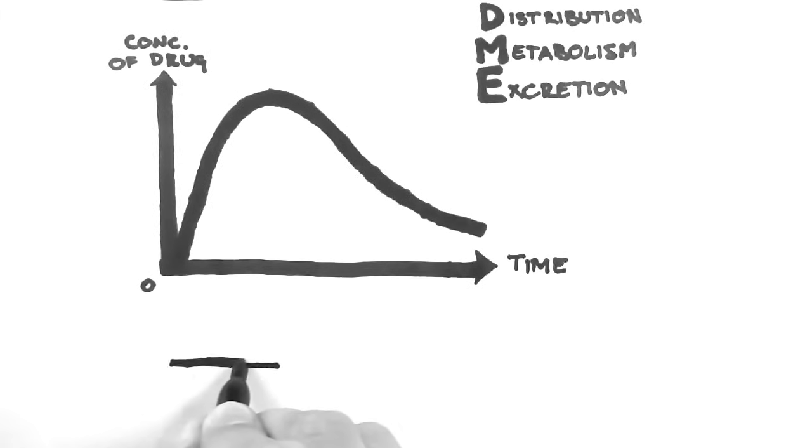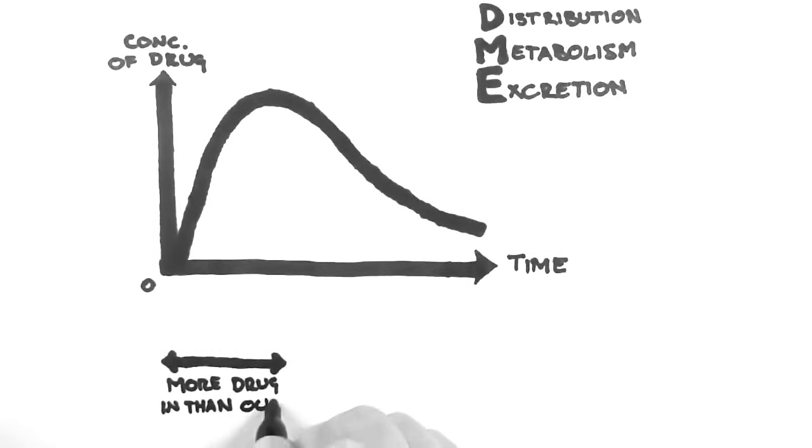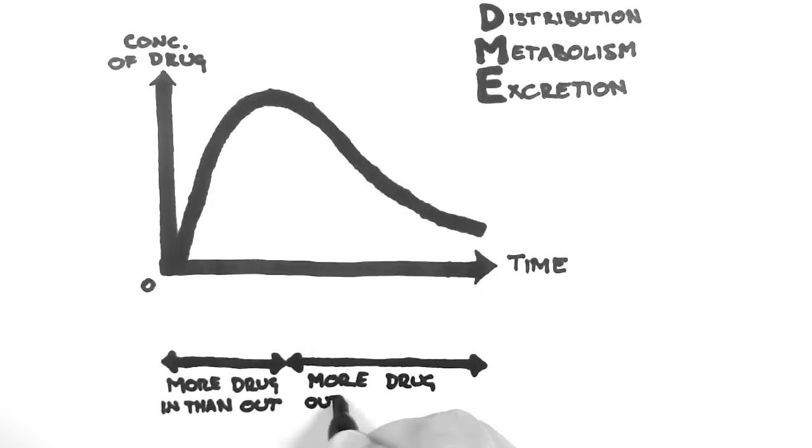So looking at this graph, we can see that in this section, the drug enters the body faster than it is being removed from it. Therefore, the concentration of the drug in the body increases. Then, after the peak of this graph, the drug is being removed from the body faster than it is entering. So the concentration of the drug in the body starts decreasing.